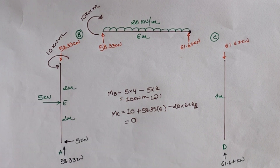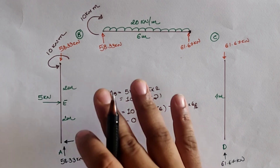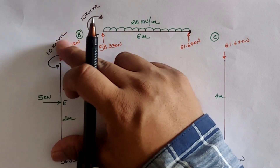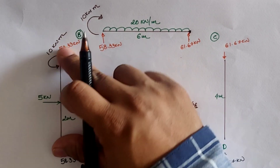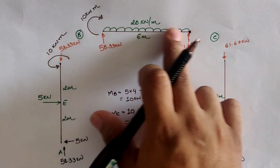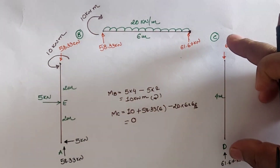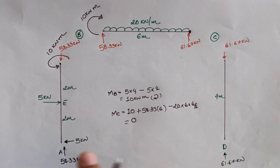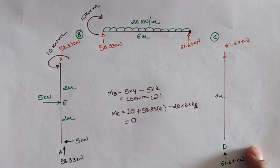Using these values, we draw the axial thrust diagram, which represents the axial load diagram by considering the load along the largest dimension of each member. For member AB, 58.33 kilo Newton is a compressive load, so we draw a compression diagram. For member BC there is no axial load, so the diagram is zero. For member CD, 61.67 kilo Newton is a compressive load, so we draw a compression diagram.